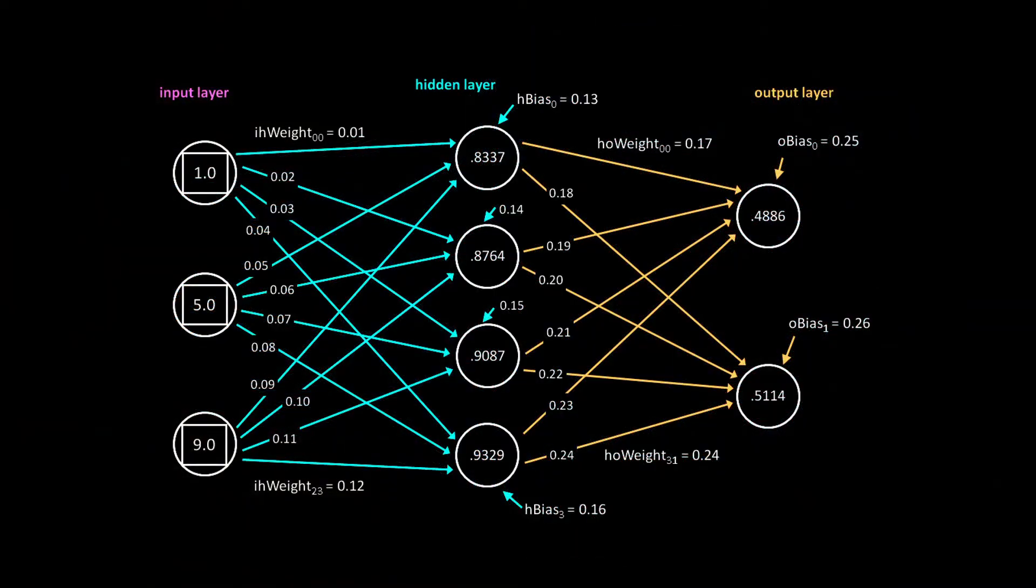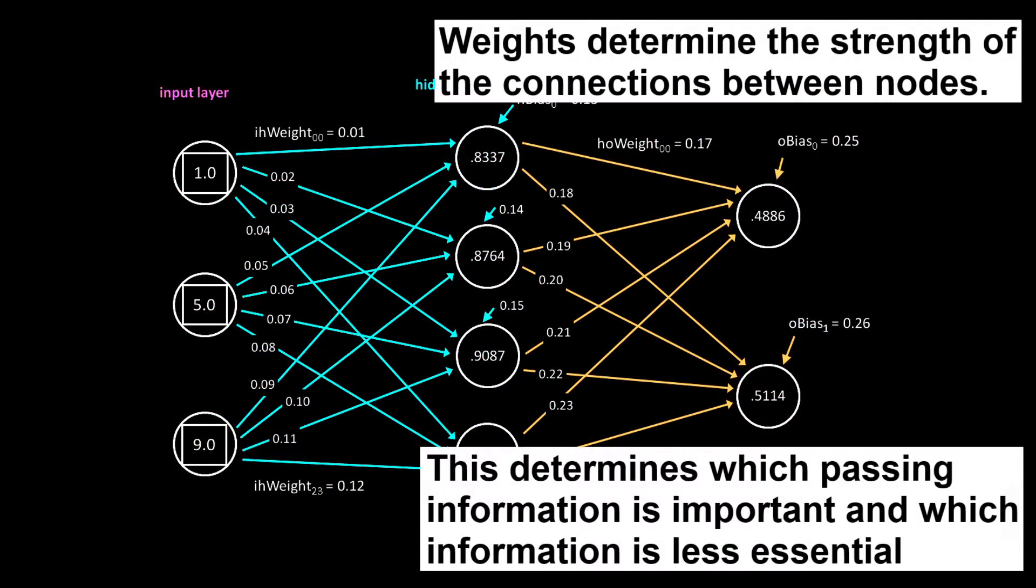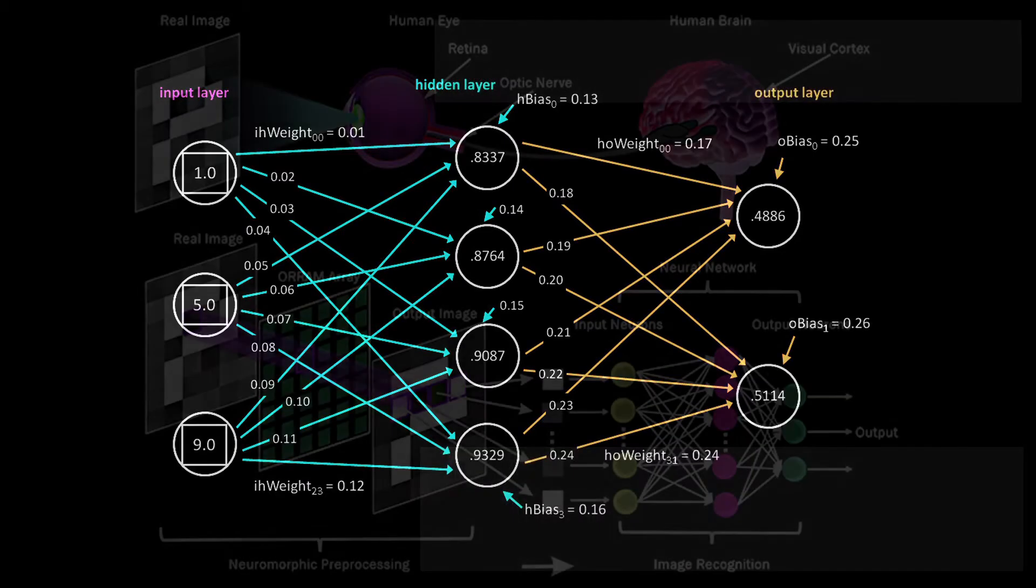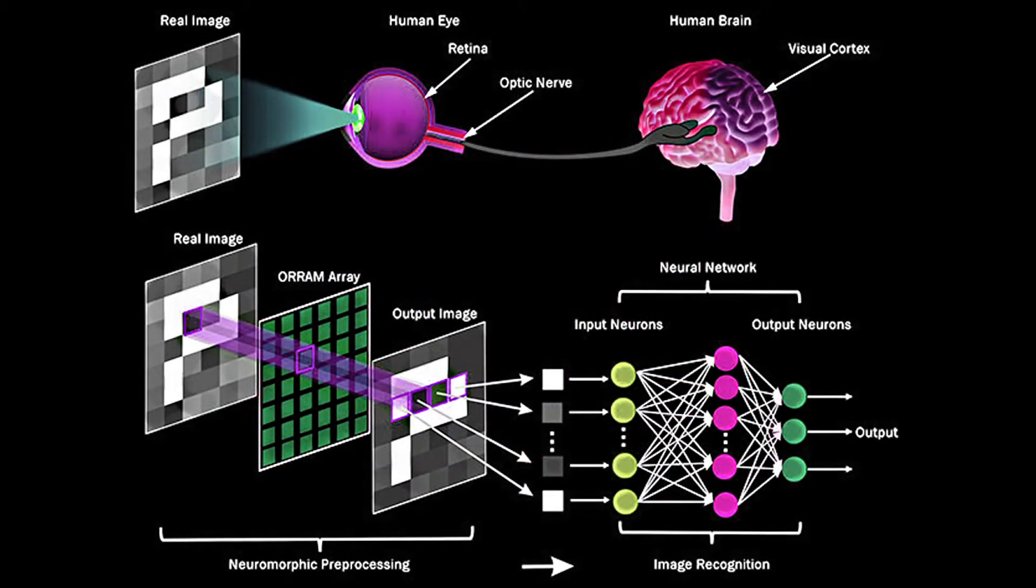Also, the nodes are connected with various connection strengths or weights. This is similar to real neurons having weaker or stronger connections, and indeed the first neural networks were modeled after the brain's visual system.